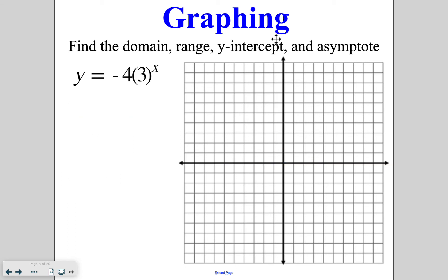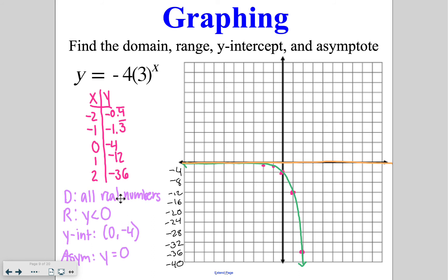Go ahead and try this one on your own, listing the four key features and then checking your graph. Domain is all real numbers. Because there's a negative, the range is less than zero since nothing is being added or subtracted. The y-intercept is at negative 4, and the asymptote is y equals zero — the x-axis. When I plug in negative 2, negative 1, 0, 1, and 2, here is the chart that I get, which then gives the graph shown.